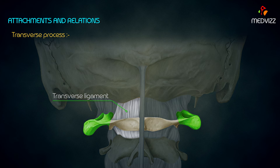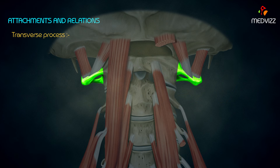The tubercle on the medial side of the lateral mass gives attachment to the transverse ligament of the atlas. The anterior surface of the lateral mass gives origin to rectus capitis anterior.